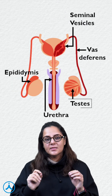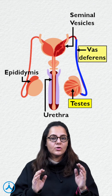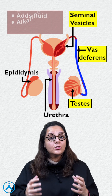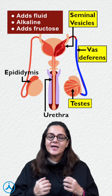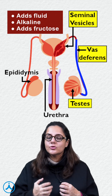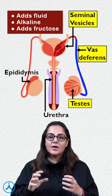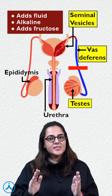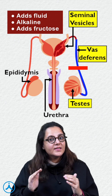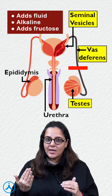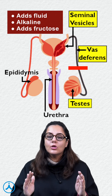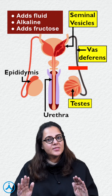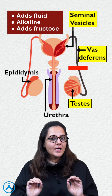Sperm formed in the testis travels to the vas deferens. On the way, the seminal vesicle adds a lot of fluid to the sperm — it makes it alkaline and also adds fructose. A block at the post-testicular level means that the sperms have been formed but they are just not able to travel up. So all the hormone levels are going to be normal because spermatogenesis has already occurred.